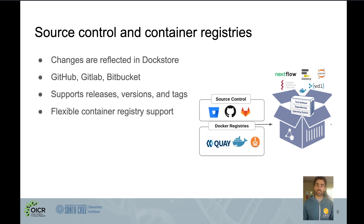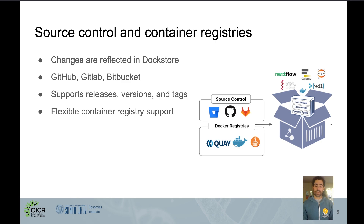Things like releases, versions, and tags will also show up so that researchers can find and use the exact version of a workflow they're looking for. In addition to supporting a variety of source control repositories, we also have flexible support for container registries, so whether your Docker containers are on Docker Hub, Quay, or Amazon ECR, they'll be usable within DocStore.